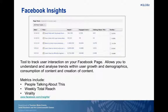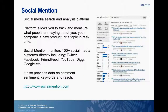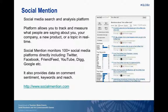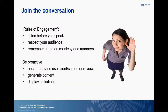Social Mention is a nice, quick, easy tool to use. You don't need an account — it's really just a search and analysis engine. You can track and measure what people are saying about you, your company, your product or a topic in real time, and it monitors over 100 social media platforms. It looks at sentiment — whether it's positive, negative or neutral — top keywords, and where mentions come from. With reach, which is the number of unique authors referencing the brand divided by the total number of brand mentions, you want that number to be high, meaning multiple unique users are talking about your brand, hopefully in a positive way.